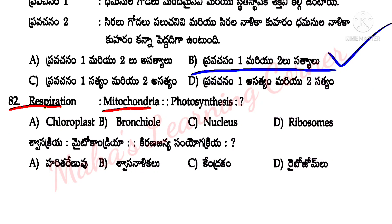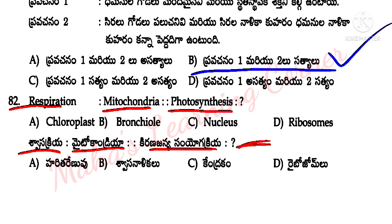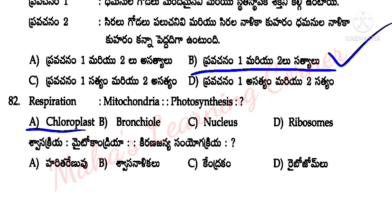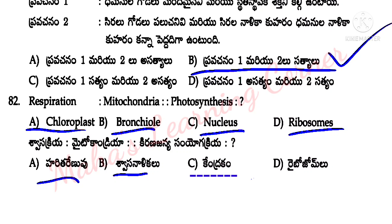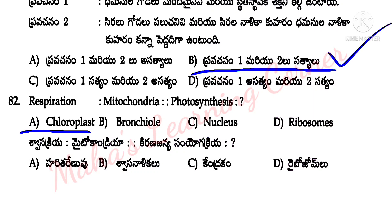Respiration is to mitochondria as photosynthesis is to — Options: chloroplast, bronchial, nucleus, ribosomes. Correct answer: option A, chloroplast.